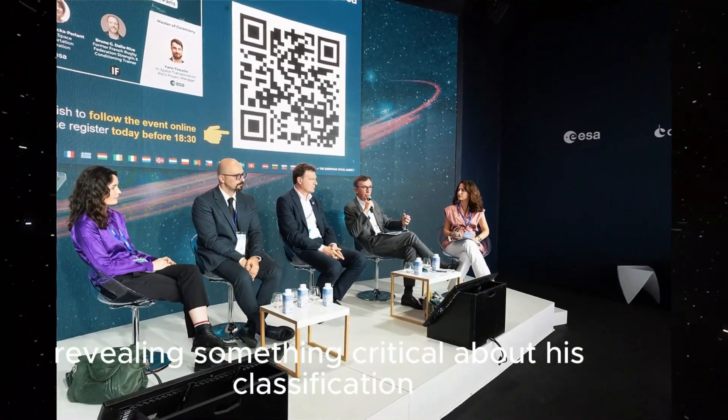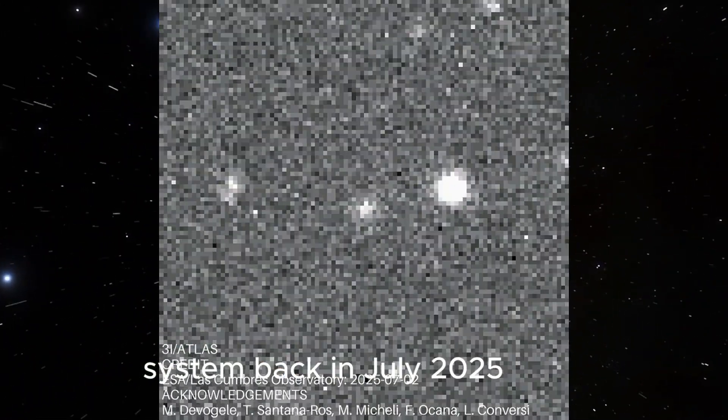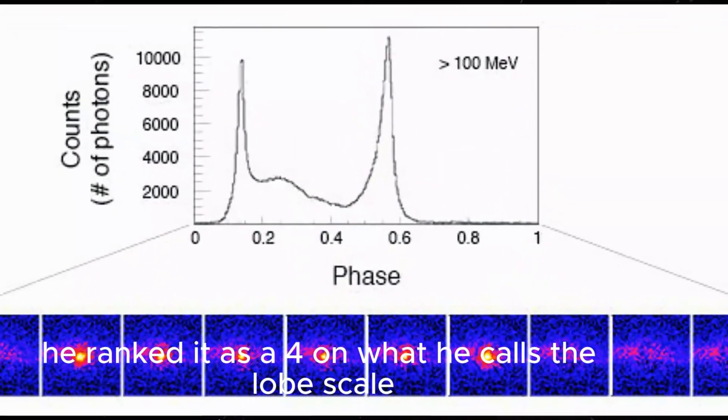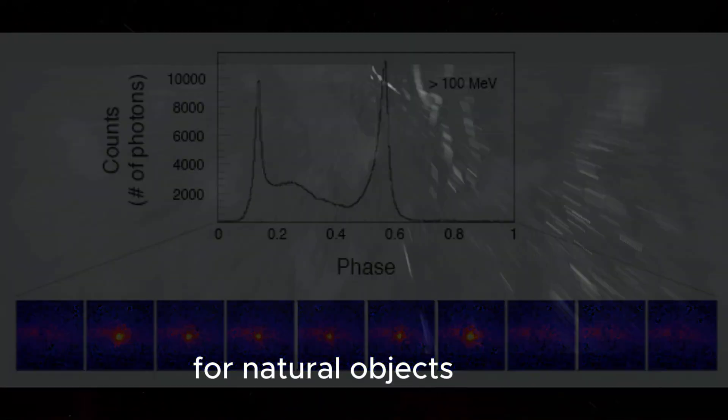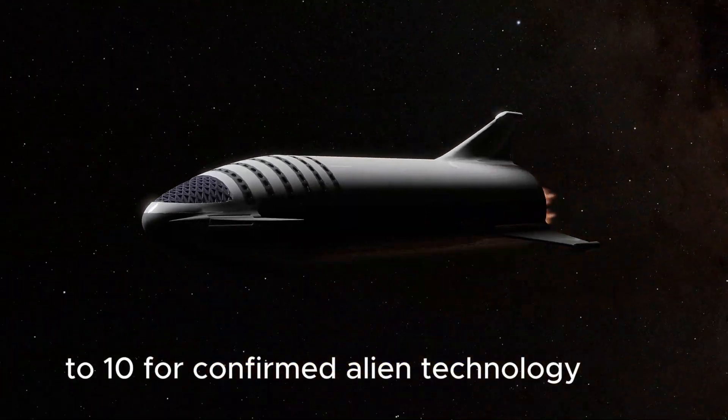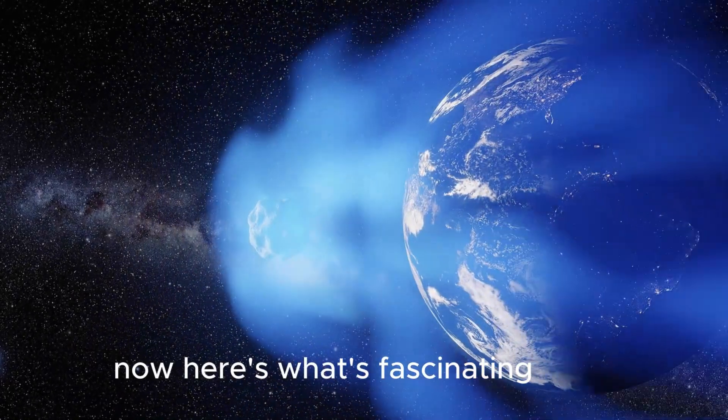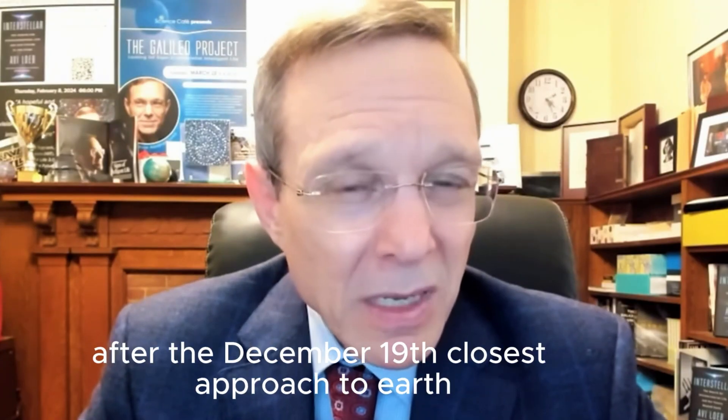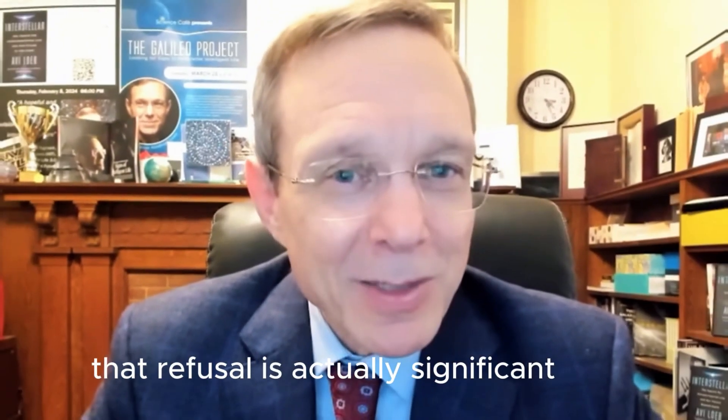On December 23rd, Loeb published a new update revealing something critical about his classification system. Back in July 2025, when 3i Atlas was first discovered, he ranked it as a 4 on what he calls the Loeb scale. That's a ranking system that runs from 0 for natural objects to 10 for confirmed alien technology. A ranking of 4 means unusual but likely natural. Now here's what's fascinating. When reporters recently asked him to update that ranking after the December 19th closest approach to Earth, he declined.